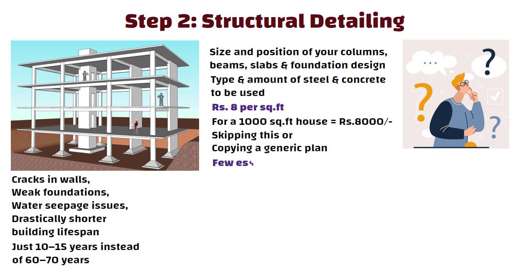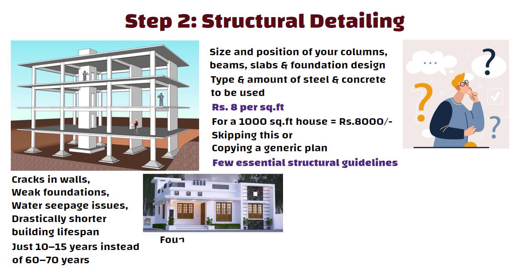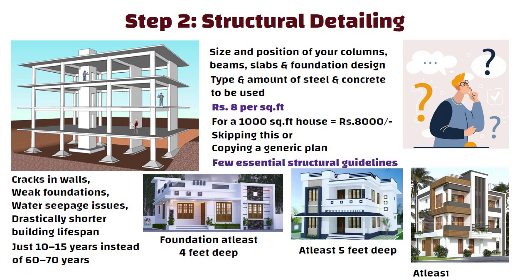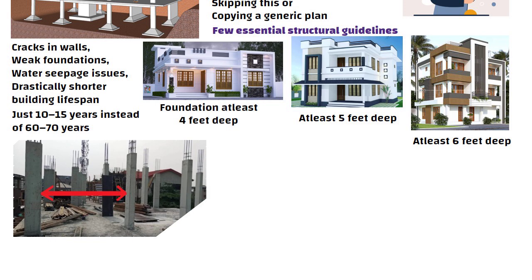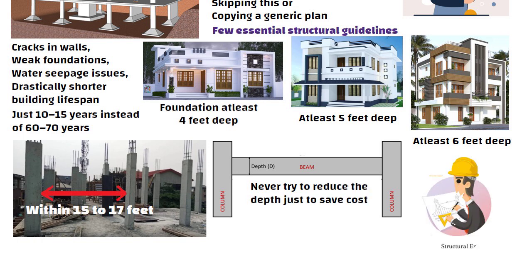Let me break down a few essential structural guidelines. If you are building a single floor, your foundation should be at least 4 feet deep. For 2 floors, go for 5 feet, and for 3 floors, a minimum of 6 feet is ideal. Keep the distance between columns within 15-17 feet. And for beams, never try to reduce the depth just to save cost. Always consult a structural engineer.